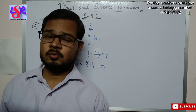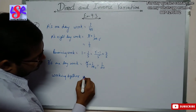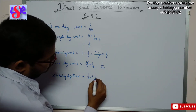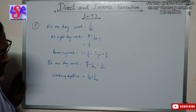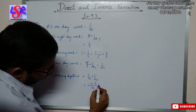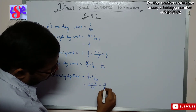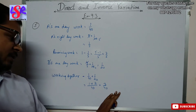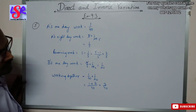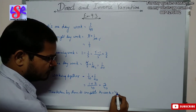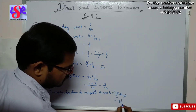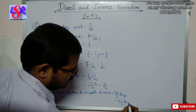Now if A and B both work together, working together equals 1 upon 40 plus 1 upon 20. We add the efficiency of both A and B. The LCM is 40, so we have 1 plus 2 equals 3 upon 40. So 3 upon 40 part of the work is completed per day. The time taken equals 40 upon 3 days, that is 13 and 1 upon 3 days as the answer.